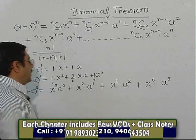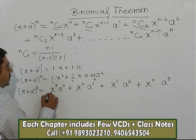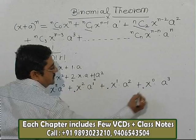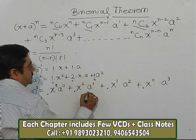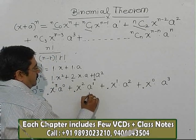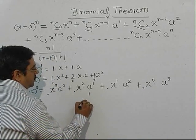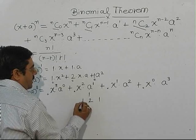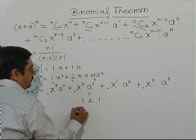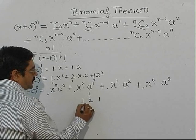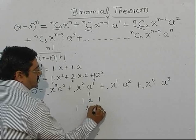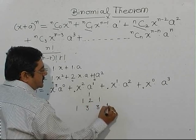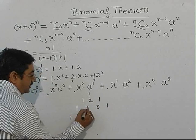In the expansion of (x + a)^3, there are 4 terms, so there will be 4 coefficients. To find them using Pascal's Triangle: start with 1, then 1. Next row: 1, then 1+1=2, then 1. Next row: 1, then 2+1=3, then 2+1=3, then 1.